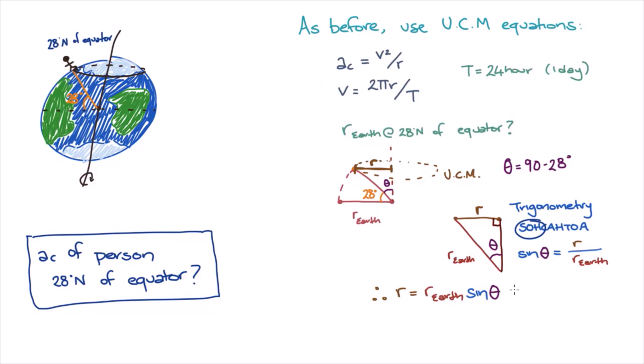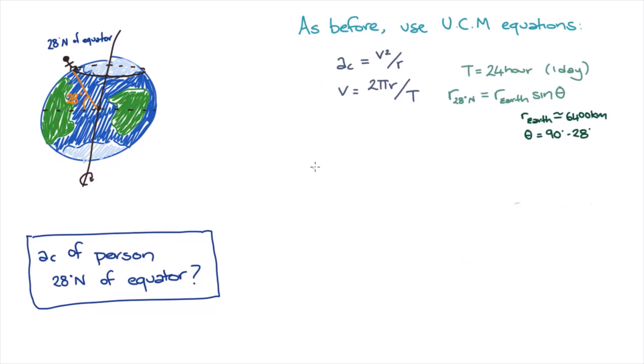So now we have everything we need. As before, we can substitute our equation for velocity into our equation for centripetal acceleration. Big T is still 24 hours or 3600 seconds, and r is the radius of the earth times sine of theta, or 6.4 million meters times sine theta.